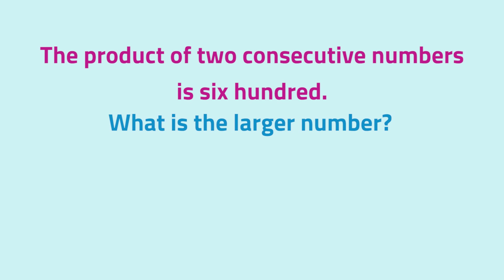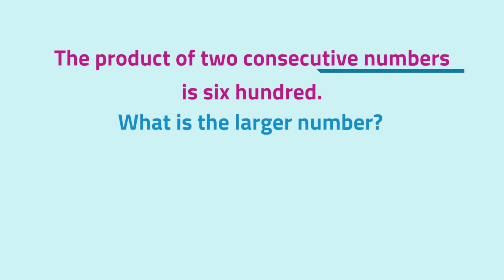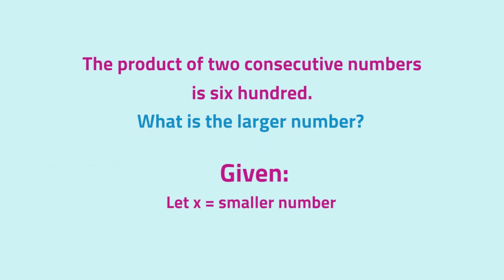In order to solve this word problem, we need to derive an equation. Since we do not know what the two consecutive numbers are yet, let's make use of variables. Let the smaller number be x and the larger number be x plus 1.